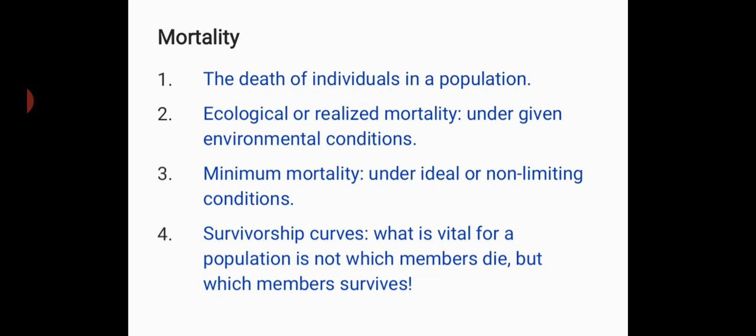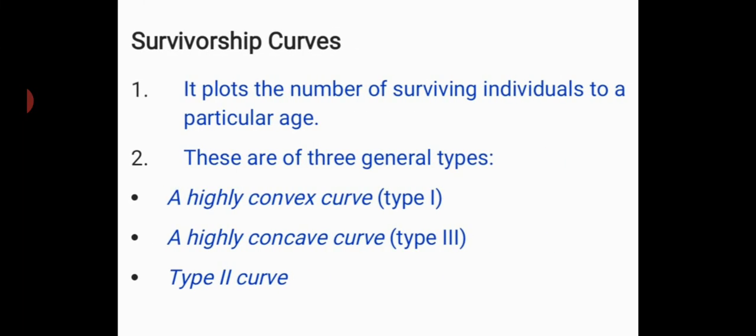What is really important for a population is not which members die but which survive. So for this we study survivorship curves. Survivorship curves plot the number of surviving individuals to a particular age. It is of three general types: type 1, type 2, and type 3.